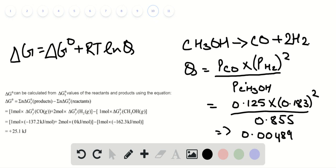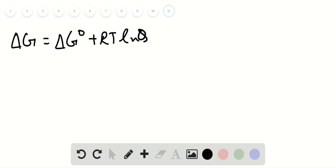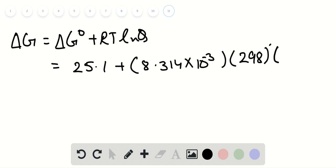We already obtained the value of Q. Substituting those values, we have 25.1 plus 8.314 multiplied with temperature 298 and natural log of 0.00489.